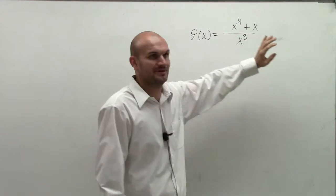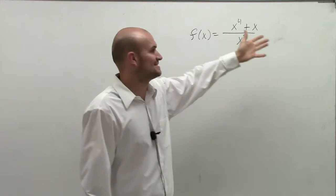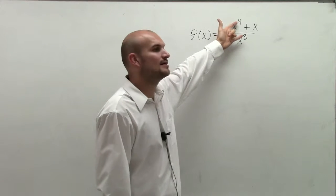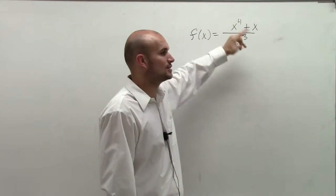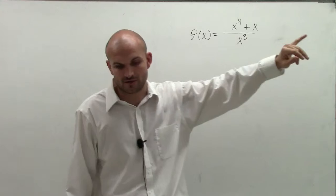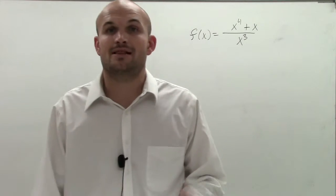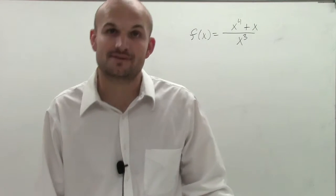My numerator, not my denominators, my exponents are not the same. So therefore, I have my exponent for my numerator is larger than the exponent of my leading term for my denominator. Therefore, telling me I do not have any horizontal asymptotes.